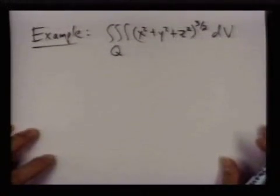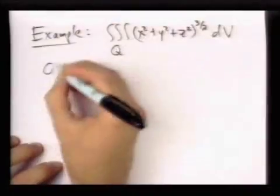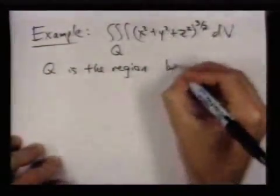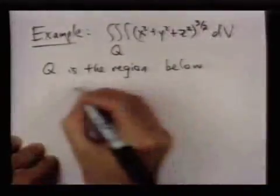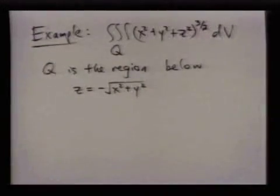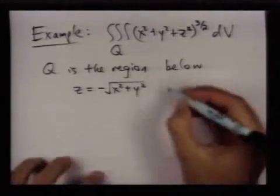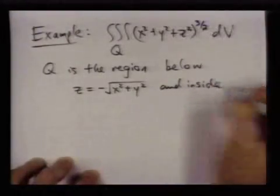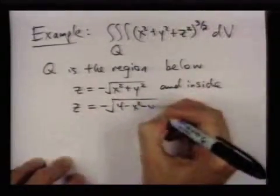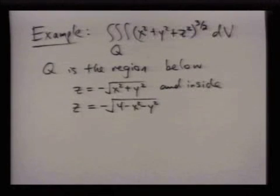Q is the region below the surface described by z equals negative square root of x squared plus y squared, and inside the surface described by z equals negative square root of 4 minus x squared minus y squared.